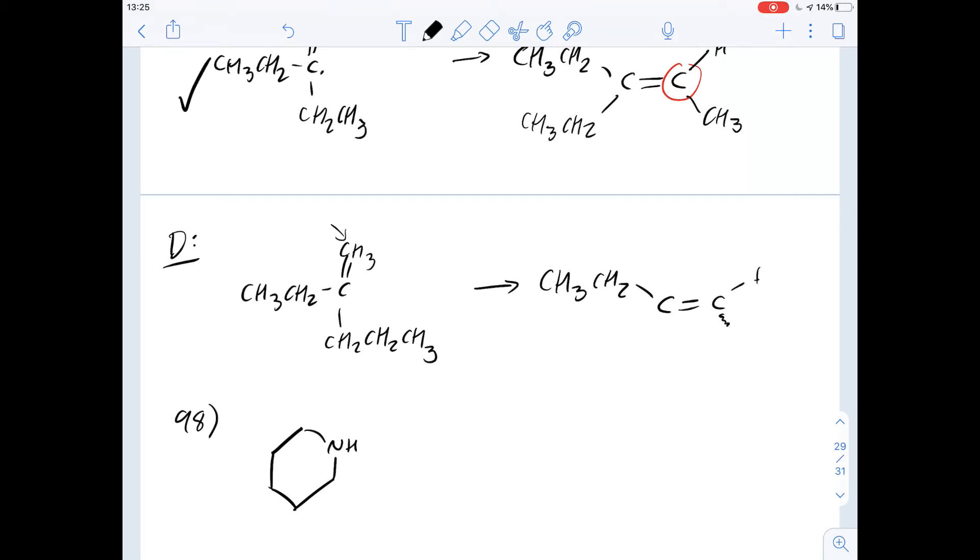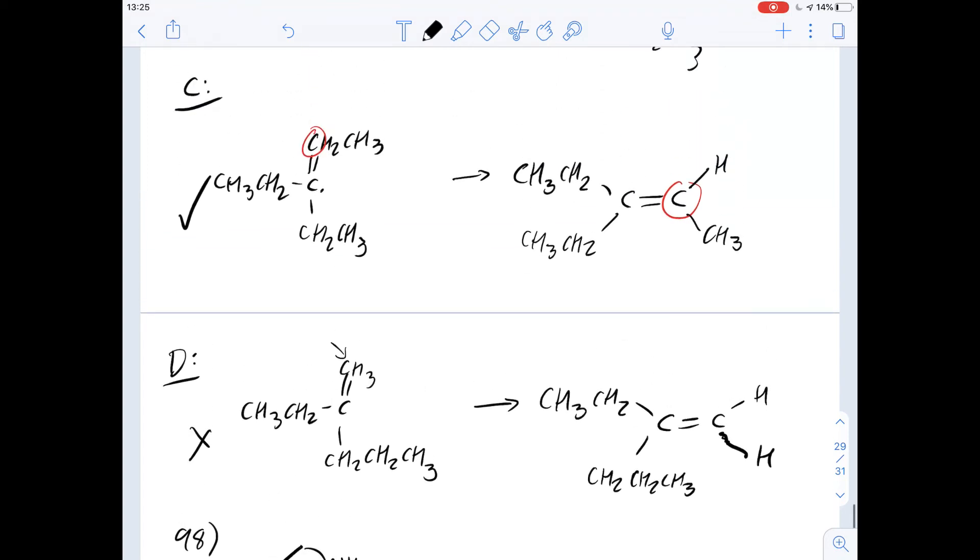Our carbon, this carbon is going to be the same as this carbon here. So we've got our two hydrogens on either side, and our CH2, CH2, CH3 group here. And of course, that's different to the product we had above. So we've just confirmed that the answer for this one is going to be C. So the answer for number 97 is C.